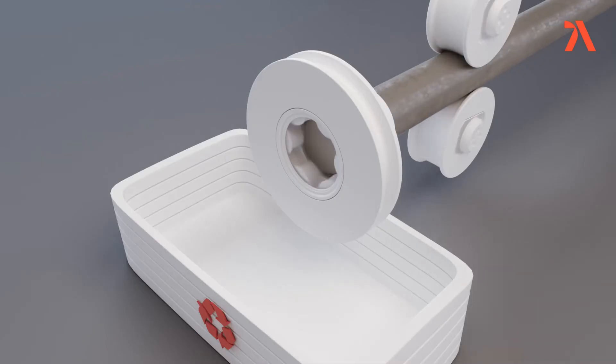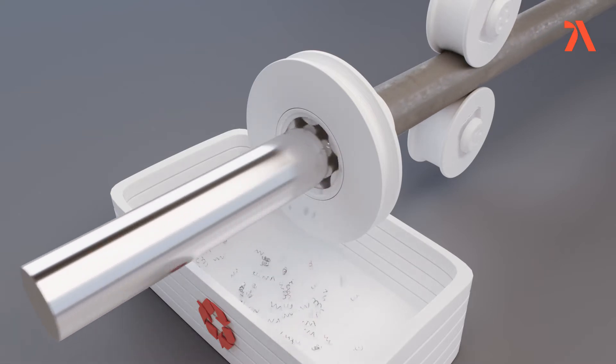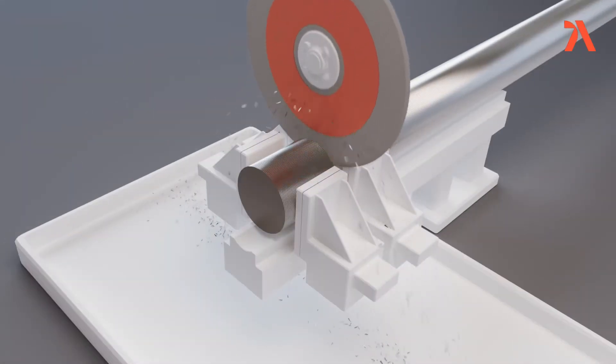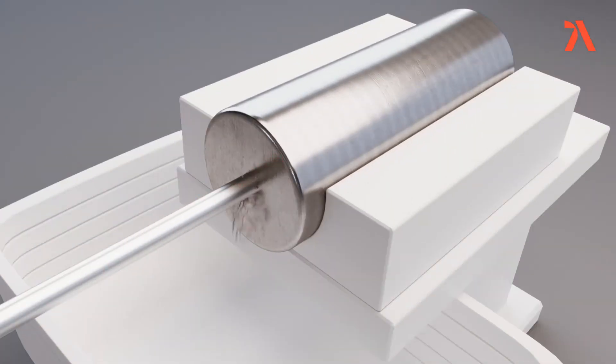To prepare extrusion billets, the bars are peel-turned, cut and deep-bored.